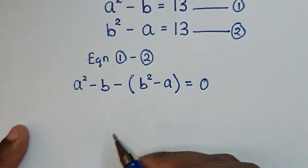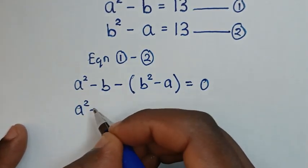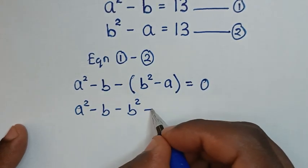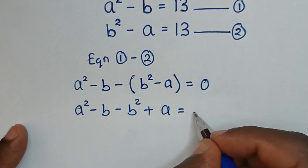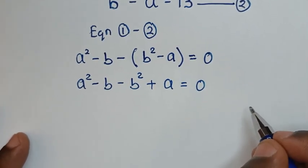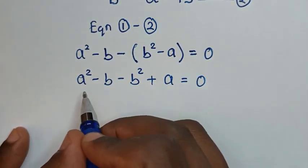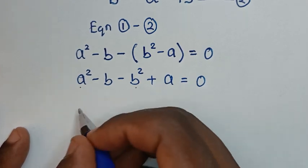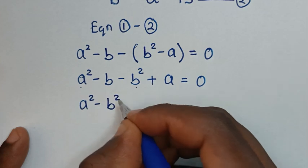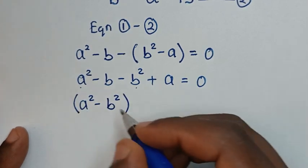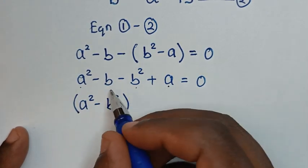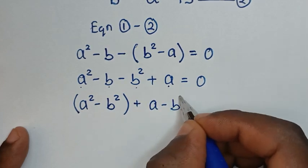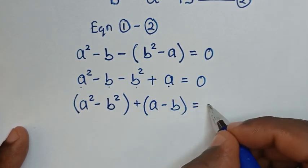Then we'll open this bracket so it will be a squared minus b, then minus b squared, then plus a is equal to 0. In the next step we'll group the difference of two squares: a squared minus b squared, then plus bracket a minus b is equal to 0.